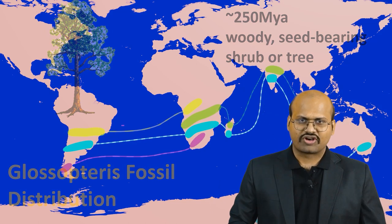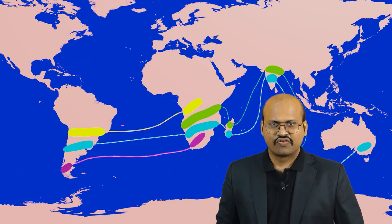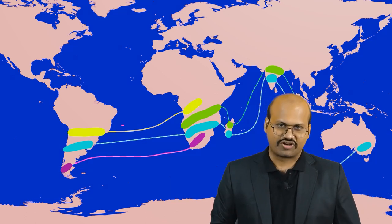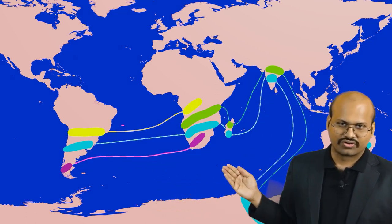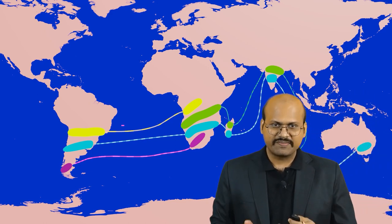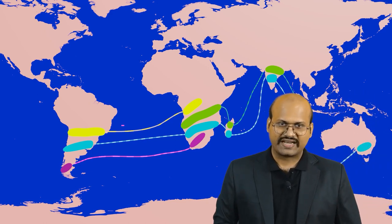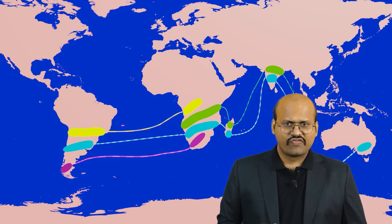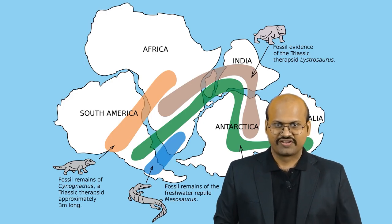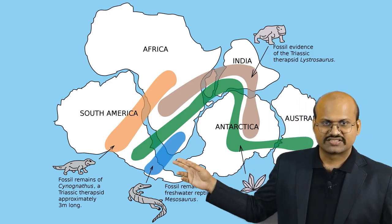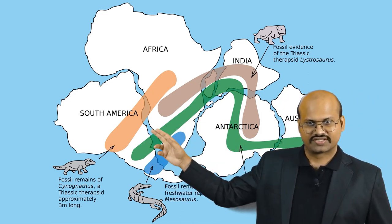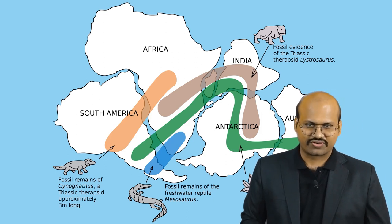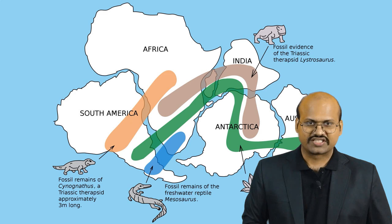If we consider all these organisms, their fossils were found in continents which were widely separated from each other. It was not possible for any of these organisms to cross vast oceans on their own, and the probability of similar species developing due to evolution on lands separated by vast distances is also very low. When Wegener arranged all the continents together, we can see that the regions where fossils were found form a continuous region. Thus, it was evidence that these continents must have existed together as one continuous land when these creatures were alive.